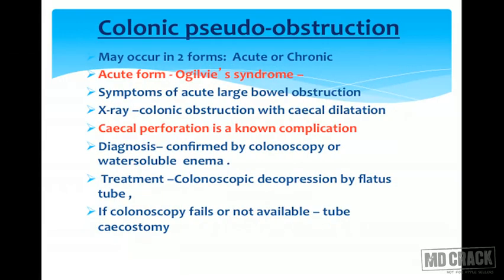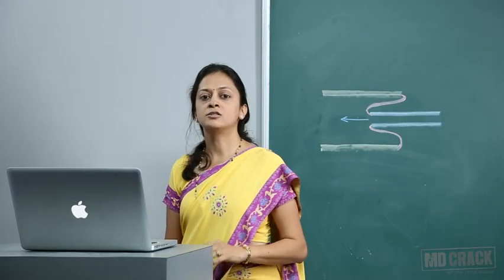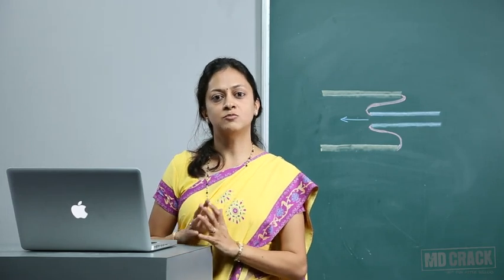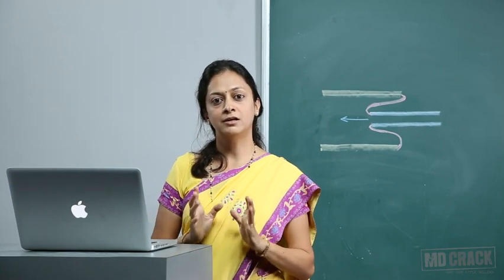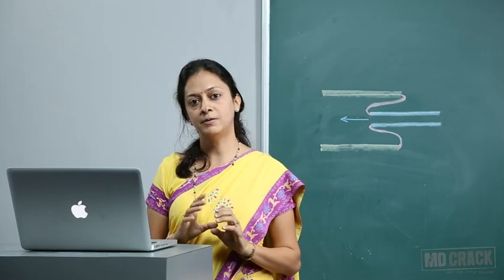Colonic pseudo-obstruction may occur in two forms — acute or chronic. The acute form is also called Ogilvie's syndrome. Symptoms are the same as acute large bowel obstruction. X-ray shows obstruction and cecal dilatation. Cecal perforation is a known complication — commonly seen because the cecum dilates and finally perforates.